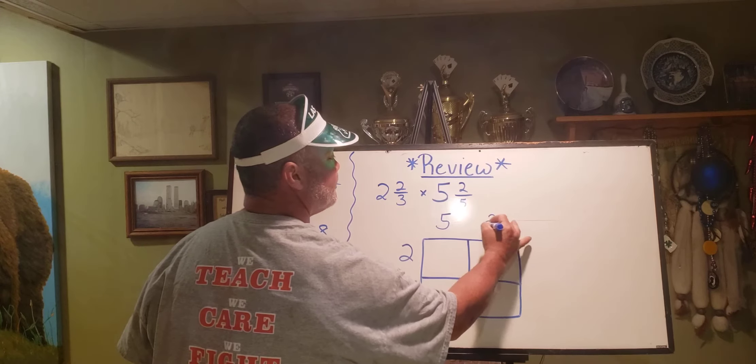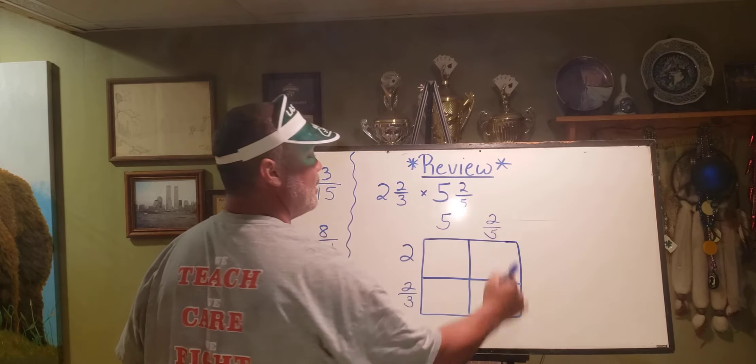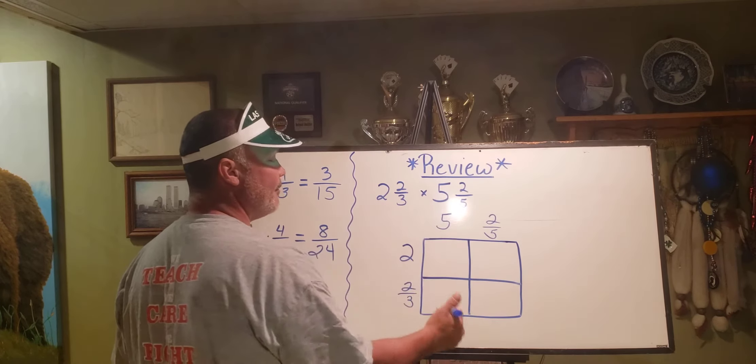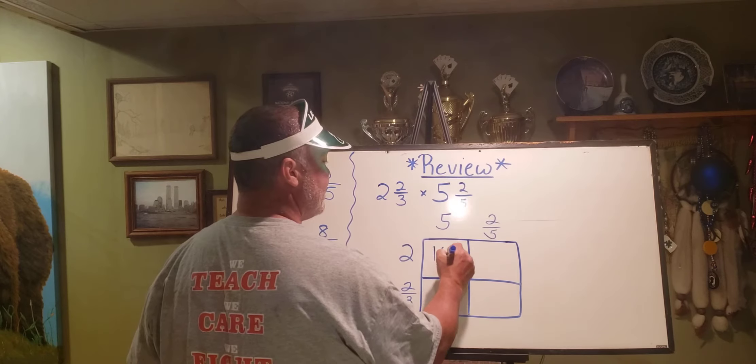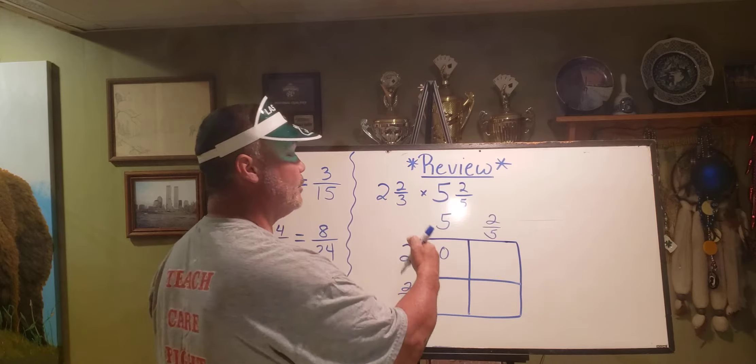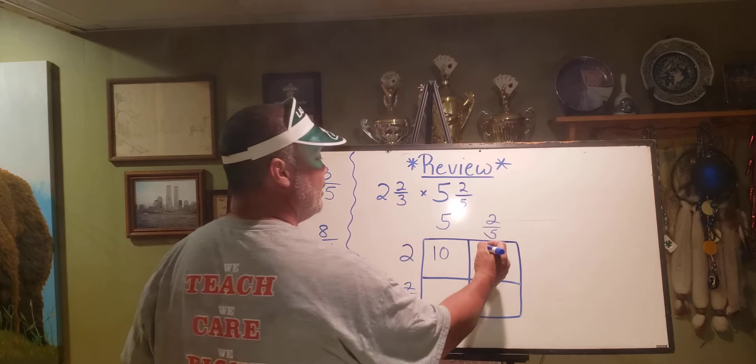Our whole numbers are first. Two times five, well that equals ten. Two times two fifths, or two over one, or two copies of two fifths, either way, we're looking at four fifths.